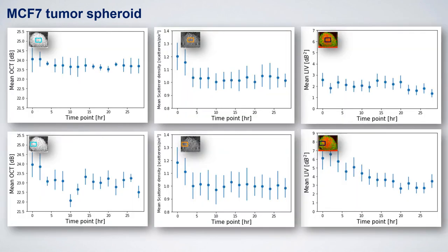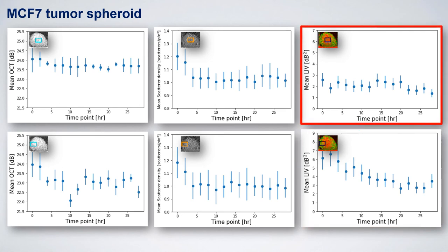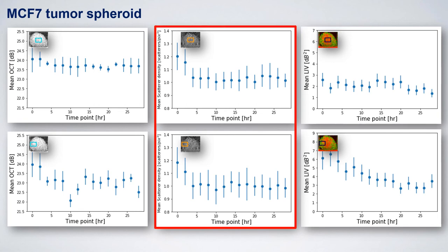The time-course alteration of the signals can be more easily understood by plotting them over time. At the spheroid periphery, the dynamic signal gradually decreased over 28 hours. On the other hand, it was constantly low at the spheroid center, because nutrients were not being supplied to the center and hence it was already undergoing necrosis at the earlier time point. The scatterer density shows a similar time course, both at the center and the periphery: it quickly decreased in the first few hours and became stable afterward.